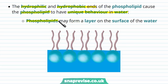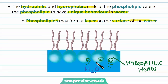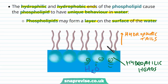This causes unique behavior when phospholipids are mixed with water. The phospholipids may form a layer on the surface of the water. The hydrophilic heads face the water because they are attracted to it, while the hydrophobic fatty acid tails face away from the water. So this layer starts to form on the surface.